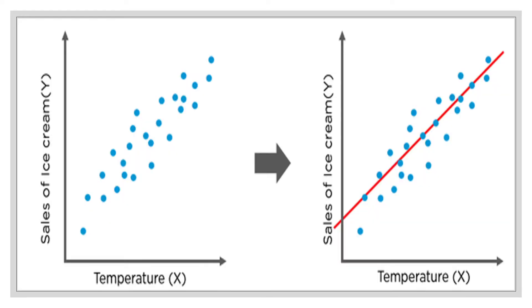To understand line of best fit better, let us see this example. Suppose I want to plot a line of best fit which shows the relationship between sales of ice cream and temperature. The temperature shown on the x-axis is your independent variable, and the sales of ice cream shown on the y-axis is your dependent variable. We all know that sales of ice cream always depends on the temperature — the higher the temperature, the more will be the sales of ice cream; the colder the temperature, the less will be the sales.